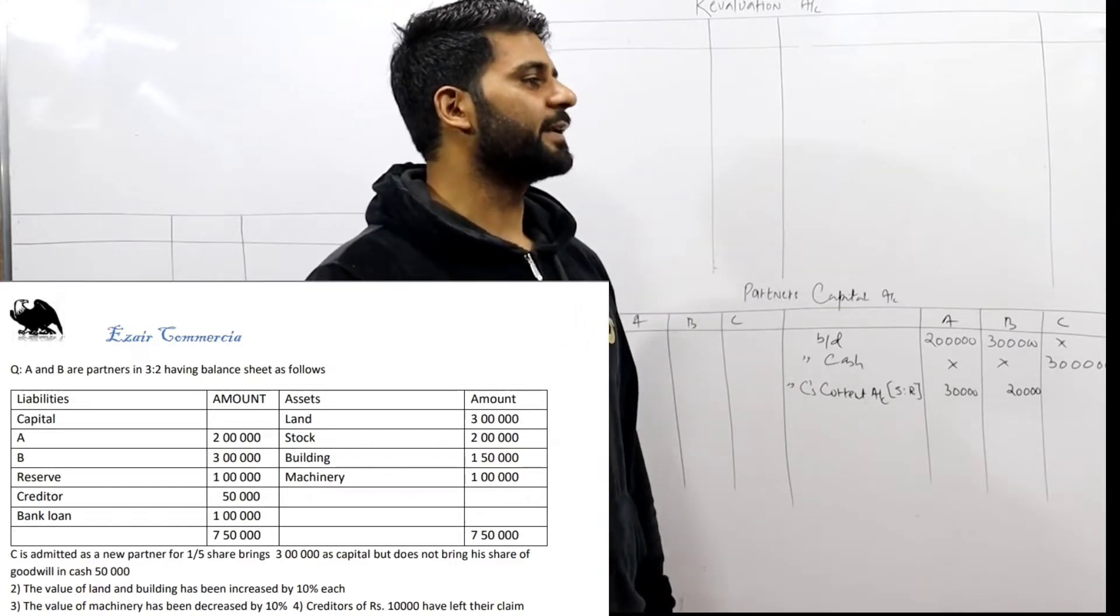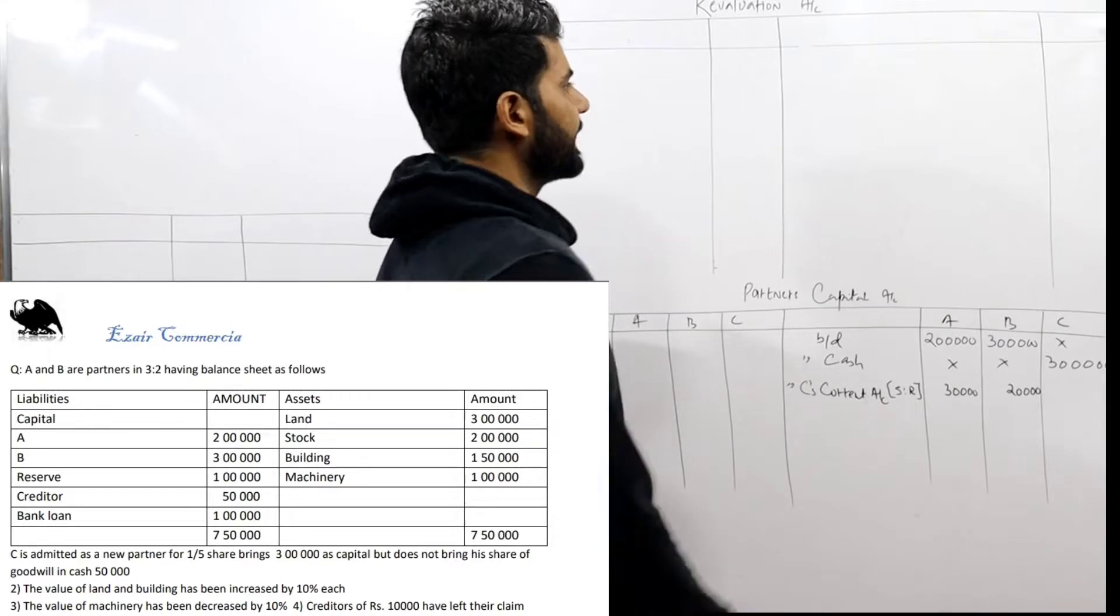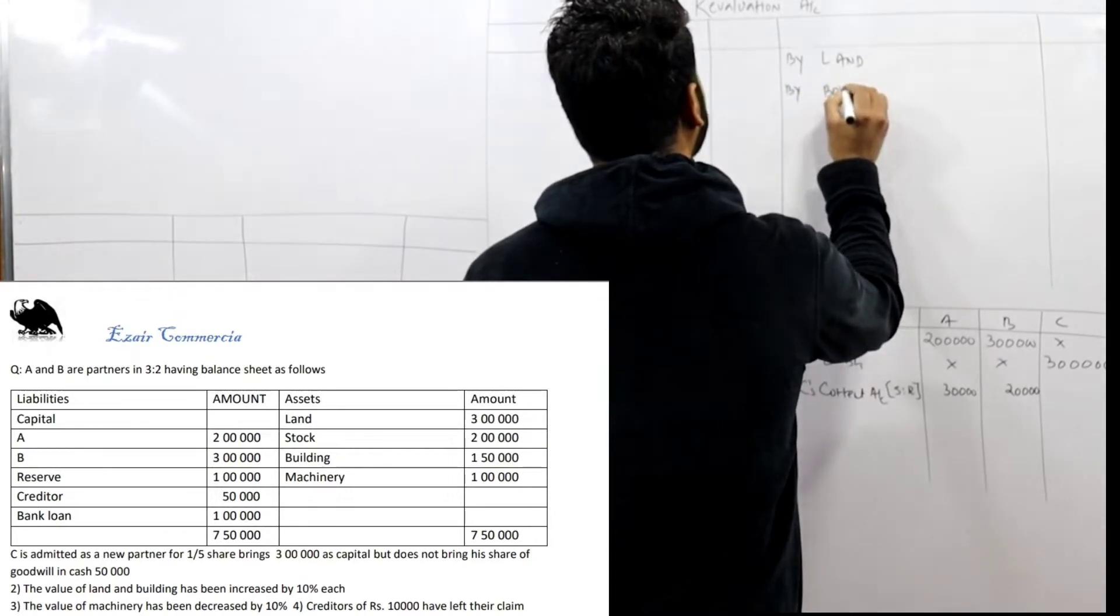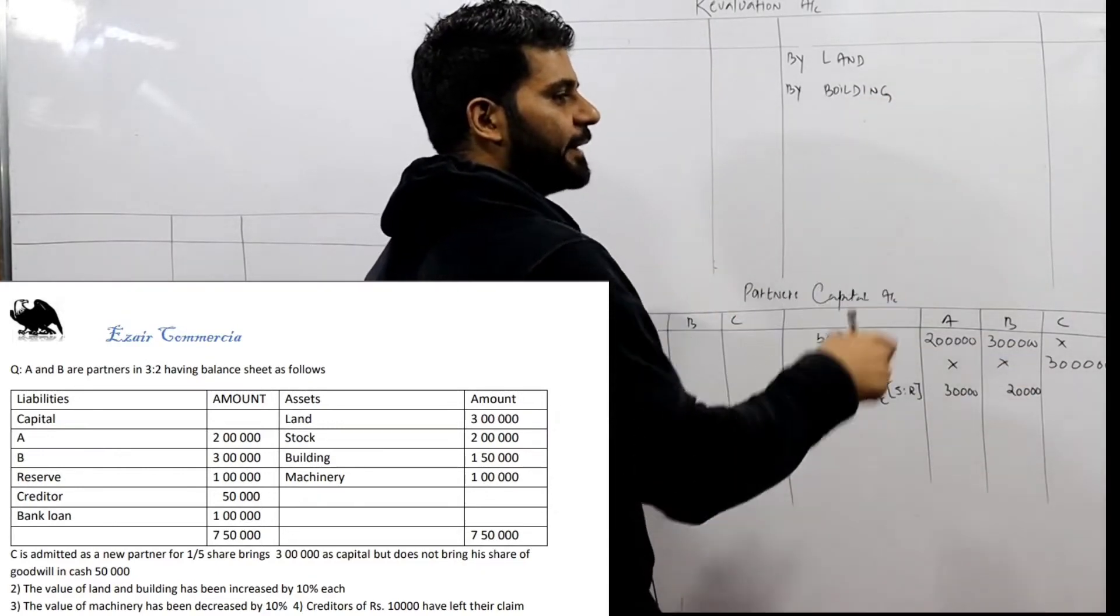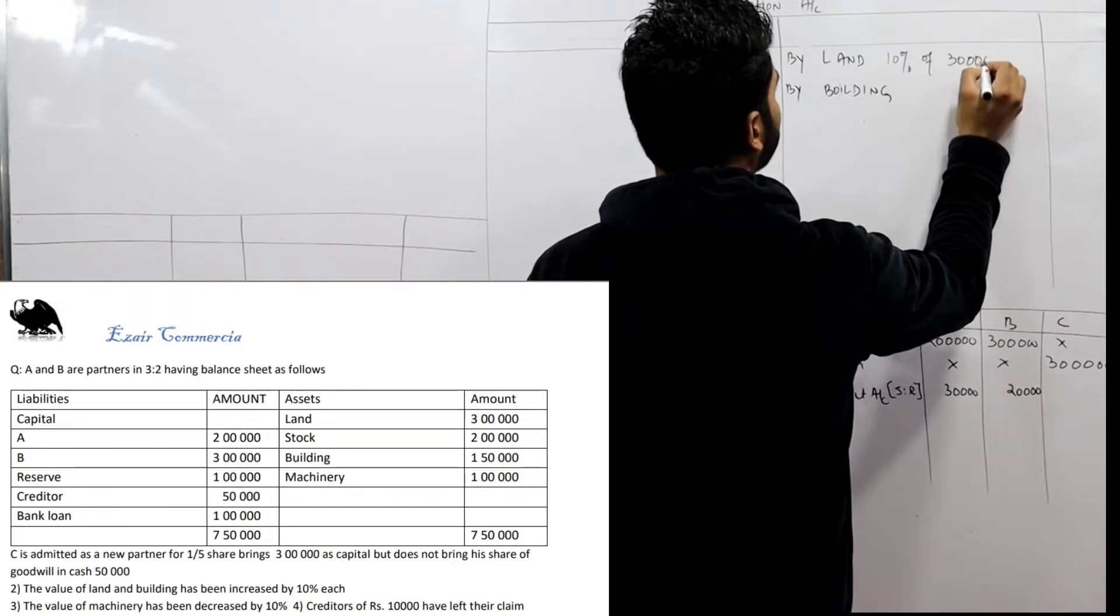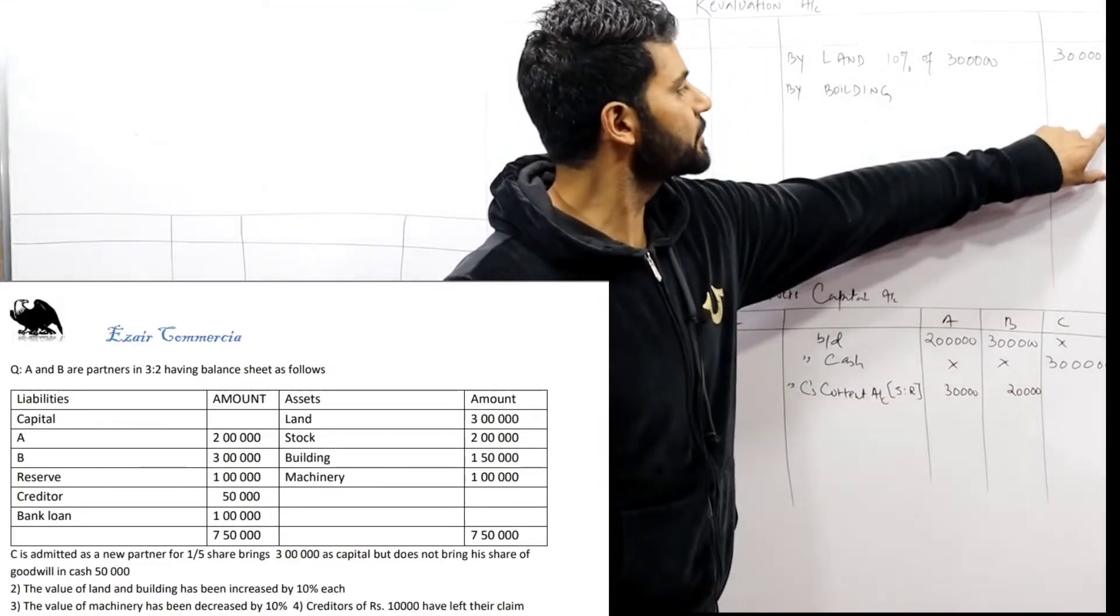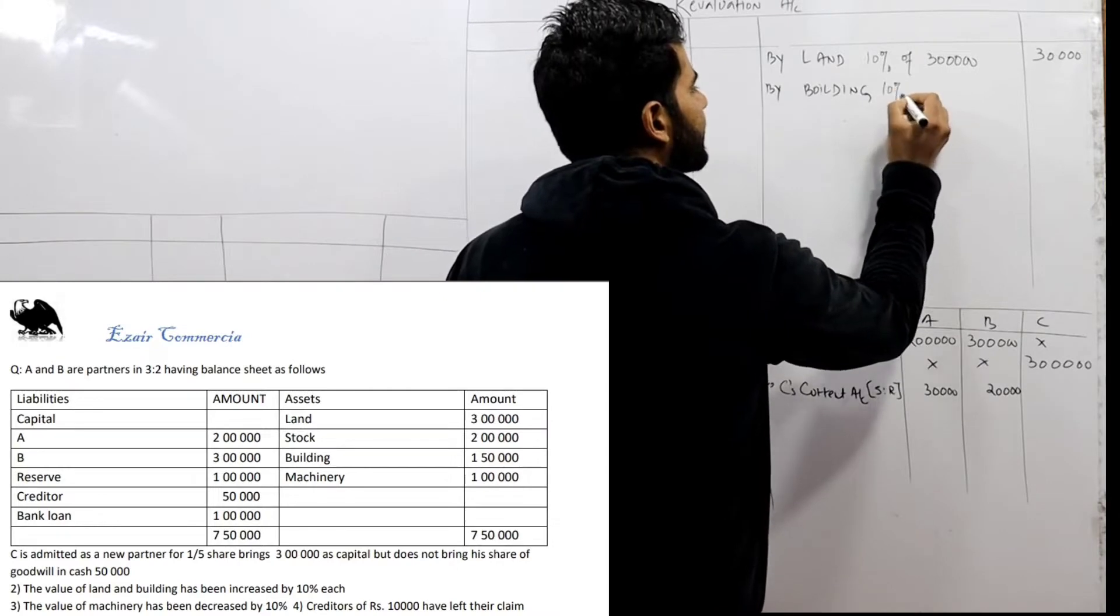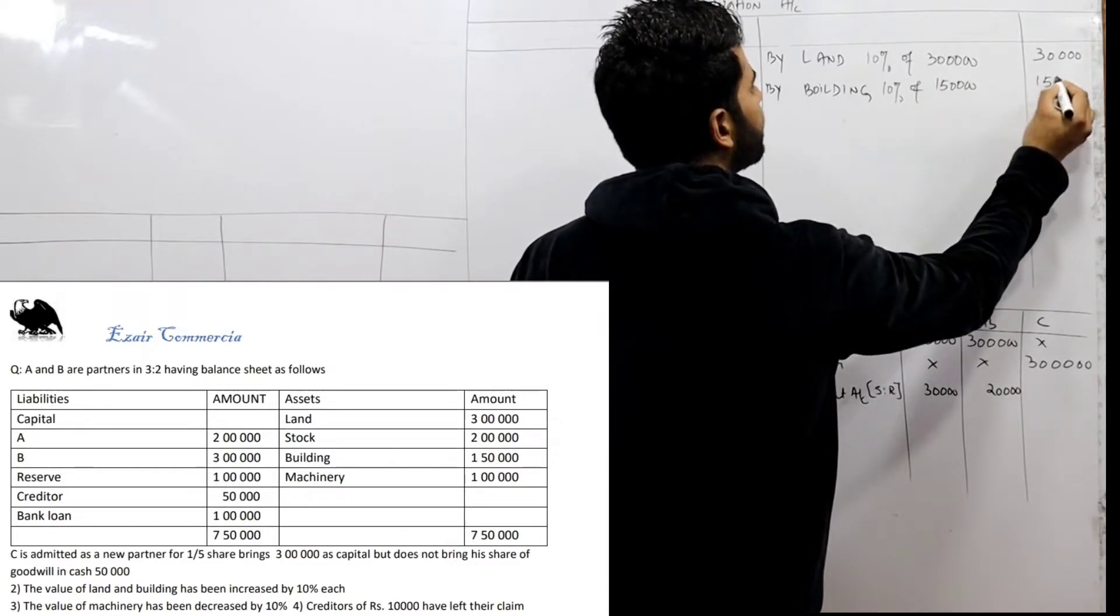The question says the value of land and building has been increased by 10%. Land and building value has been increased. How much? 10%. Now listen to me, my dear. We will write here by land and by building. Land value has been increased 10%, that is 10% of 3 lakh, that equals 30,000. Building is 10% of 1,50,000, so that is 15,000.